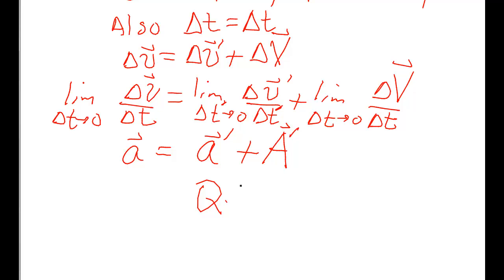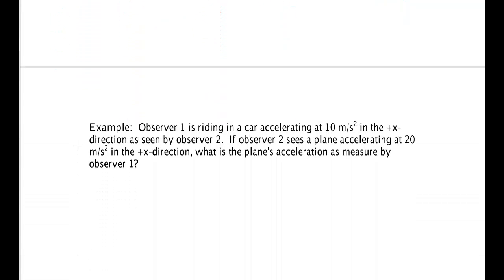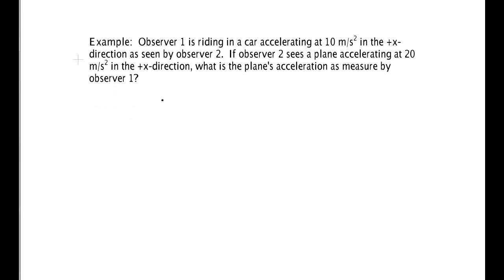So that's our proof of the transformation equation and let's give you an example of a problem that you might be given. Observer number one is riding in a car. So here's a car and we'll call that one the primed observer. If you wonder how I know which one's prime and which one's not prime, I don't. You can choose either one, but you have to make a choice and be consistent after that. This person is seen by another observer. So here they are. That's going to be my unprimed observer.